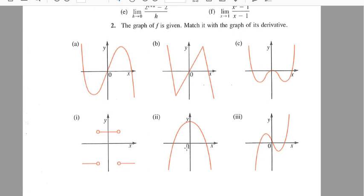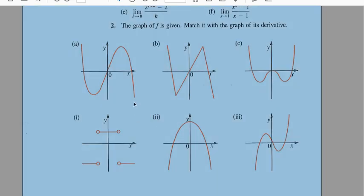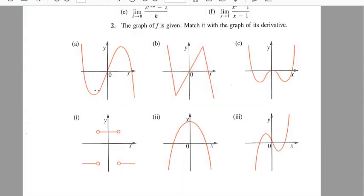Okay, so could it be this one? Maybe. Could it be this one? Yes. Could it be this one? No. So probably a is going to go with two.